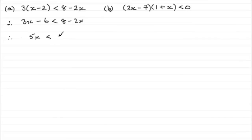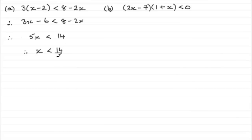The sign remains exactly the same. Remember, it only reverses if you multiply or divide by a negative number. Now what we want to do is divide by plus 5 on both sides, so the inequality won't reverse, so it's just going to be x is less than 14 fifths. You could write that as 2 and 4 fifths, or 2.8 — it won't matter. So that's part A done.